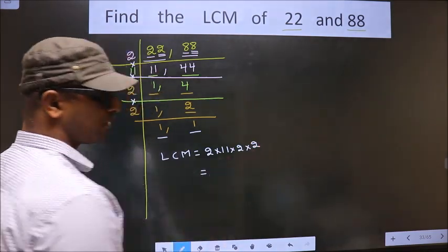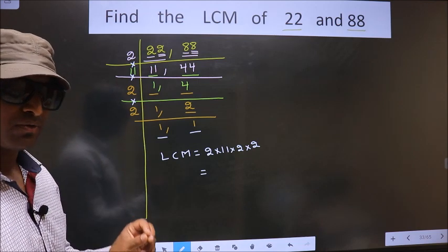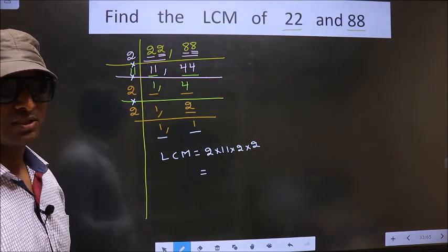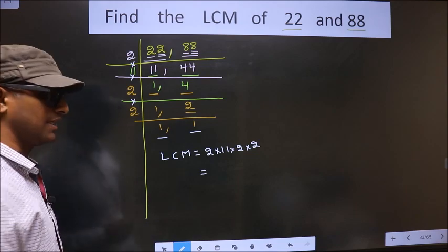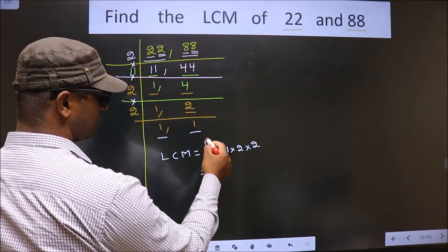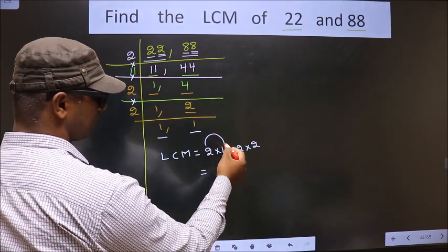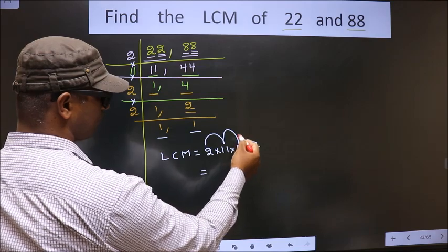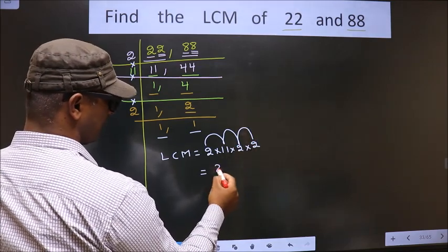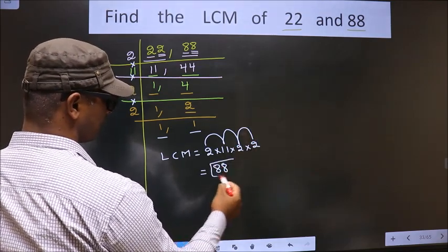You multiply all these numbers. Whatever number you get that is your LCM. So let us multiply. That is 2 into 11, 22 into 2, 44 into 2, 88. So this is our LCM.